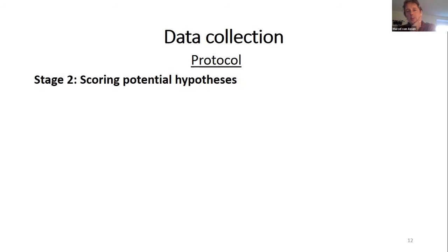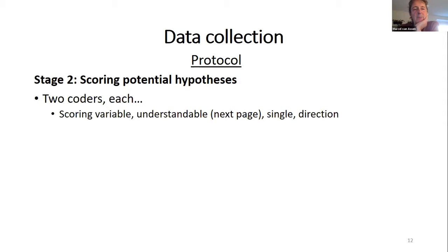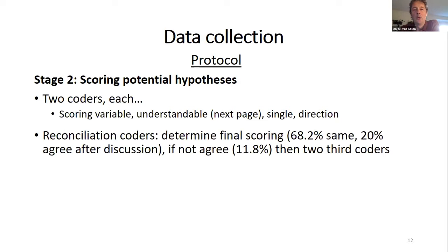In the second stage, we score the potential hypotheses. Two coders each score the hypotheses on the first four variables: contains at least one variable, understandable, single, and direction. In the reconciliation stage, we found that 68% of the time coders had the same scoring, and in 12% of cases, a third coder had to make the final decision.